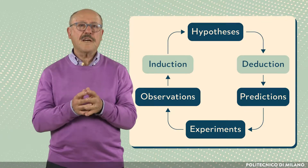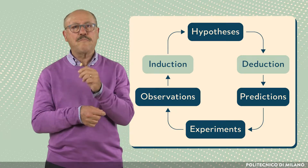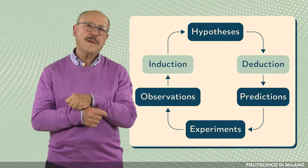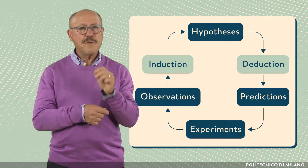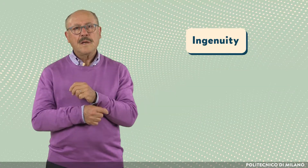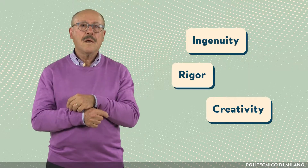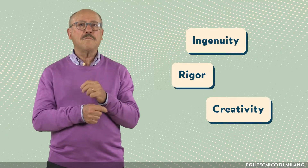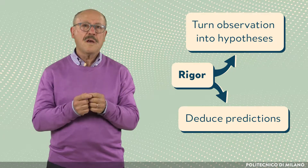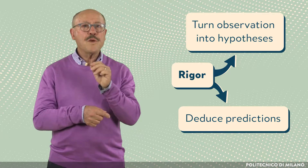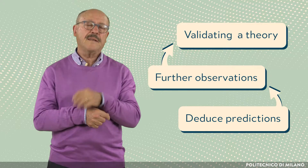This lecture continues the discussion of the scientific method, which was presented as an iterative process as described here. As we observed, the process is not a mechanical workflow, but requires ingenuity. The scientific method combines creativity with the required rigor. A rigorous approach is needed both to turn observations into hypotheses, and to deduce predictions based on hypotheses, which lead to further observations with the goal of progressively validating a theory.